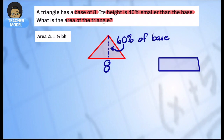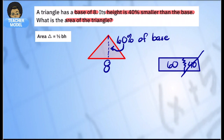To clarify: if this is one hundred percent and I want something that's forty percent smaller, I take away forty percent. That leaves sixty percent — that's why the height is sixty percent of the base. So let's figure out the height before we can find the area of the triangle.